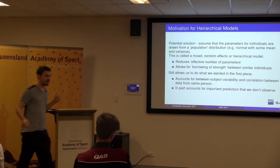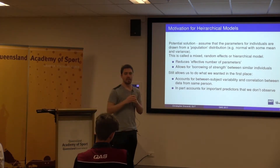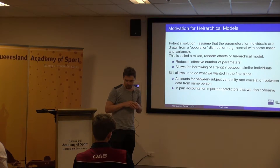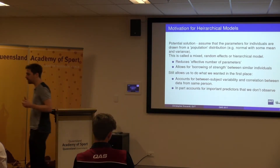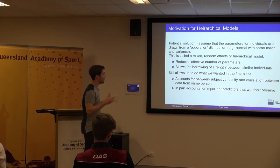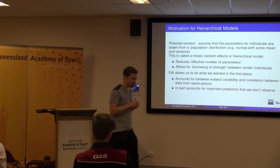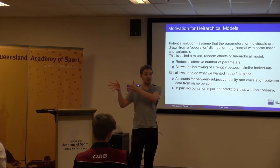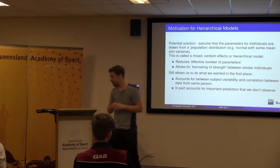One potential solution is to still allow each individual to have their own parameter, but then make the assumption that all of our parameter values come from a population distribution. So we all get our own set of parameters, but there's some kind of restriction on those parameters. From that point of view, we effectively reduce the number of parameters in the model. We get the effect of reducing the effective number of parameters, and furthermore it allows us to borrow strength in our data. So if I don't have many observations on a particular person but there's another similar person, that person can borrow strength from the data of that similar type of person.